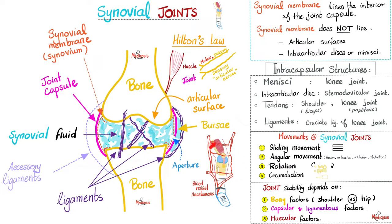Blood supply of the joint — tons of blood, with anastomosis around the joint. That's why if you have septic arthritis — an infection of the joint, say the knee — it can spread very quickly to the bloodstream, causing sepsis and septic shock, which can be fatal. As for nerve supply, it follows Hilton's law: the same nerves supplying the muscles around a joint also supply the joint itself. The nerve supply to the joint is sensory only — we call them the articular nerves.